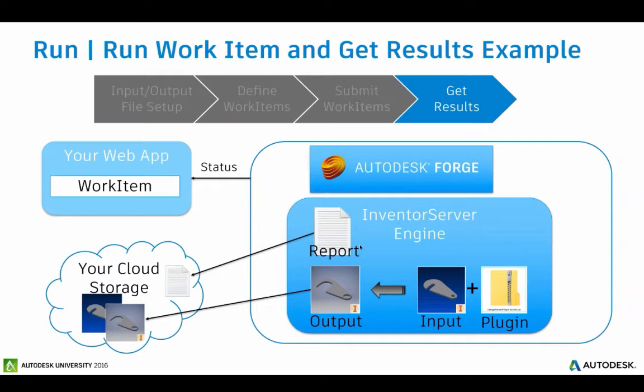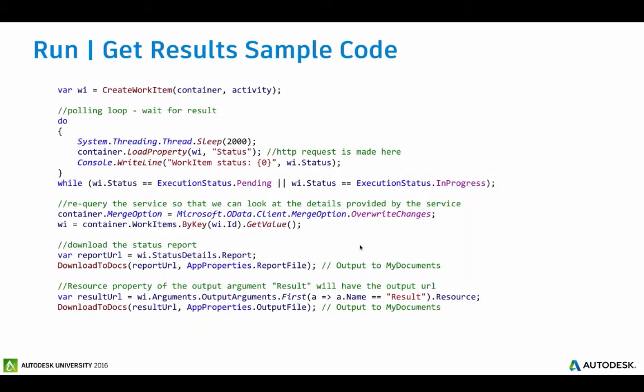Then we send those things out to your cloud storage. Here's a sample for polling for the result: I create a work item, poll for the result, and once that result comes back as not pending or in progress, I go and get the work item values out, get the report URL, and the actual results. In my example I just download those to my local drive so I can debug it with my app.